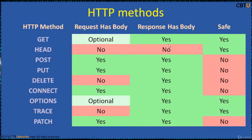These are some HTTP methods, and some methods can be called dangerous. Safe methods here are HEAD, GET, OPTIONS, and TRACE. These are by convention intended only for information retrieval.